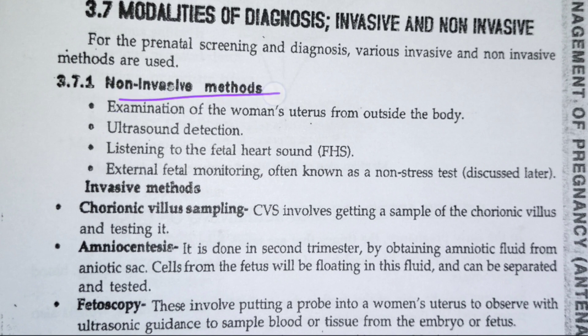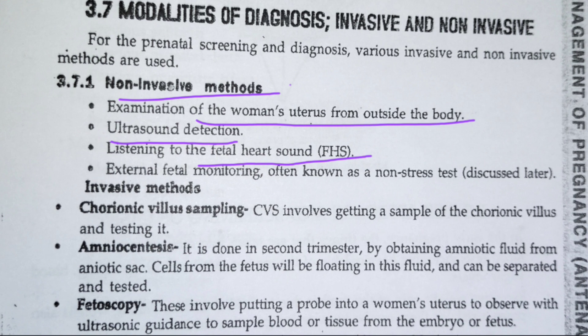Now let's see what tests are performed during pregnancy. Non-invasive methods generally include observation or palpation — examining the women's uterus from outside the body to see how the uterus is growing. Then ultrasound detection to see fetal movement and growth, listening to fetal heart sound, and tests like NST and CST, which are used to detect fetal heartbeat and how the baby is responding — whether the baby is active or not.